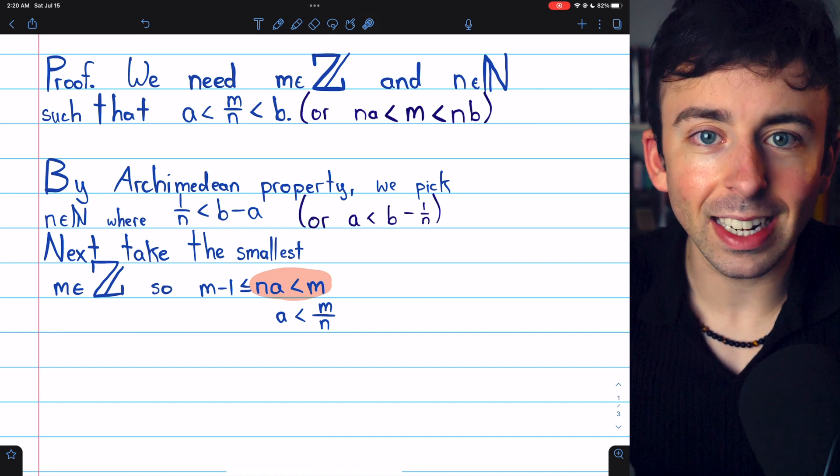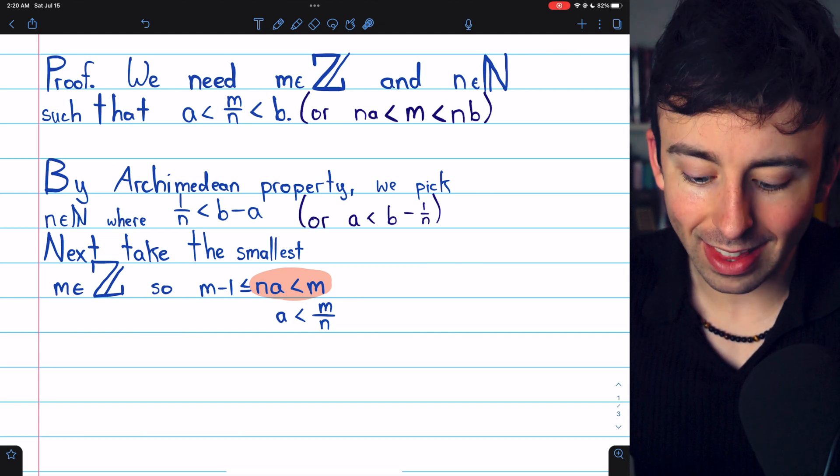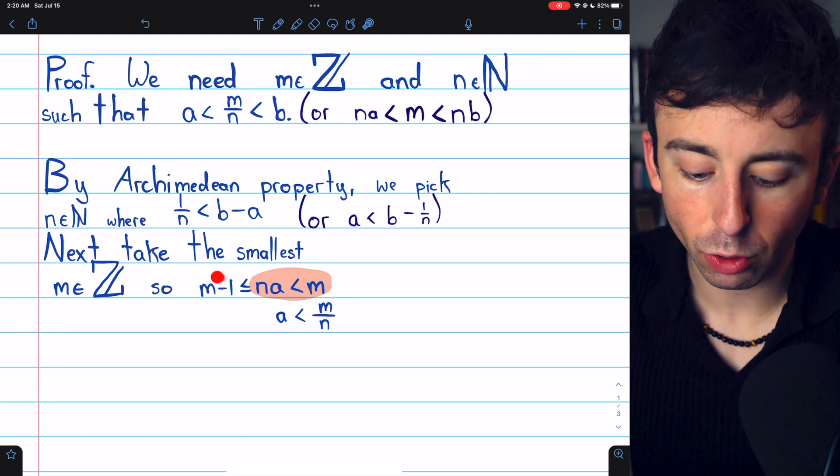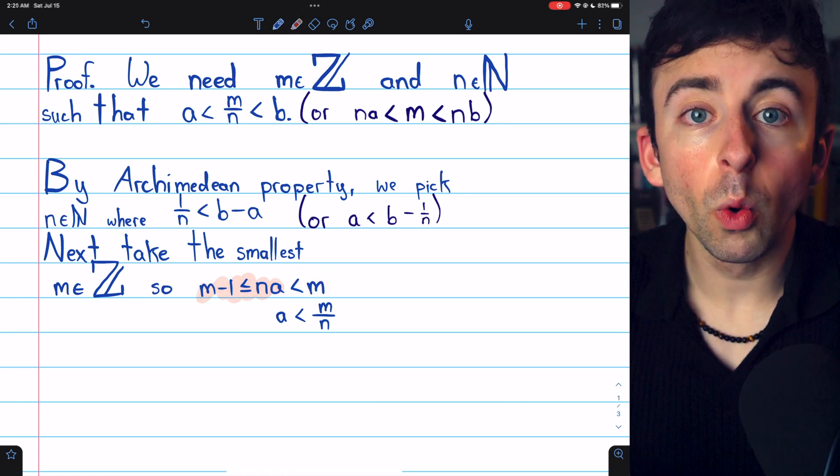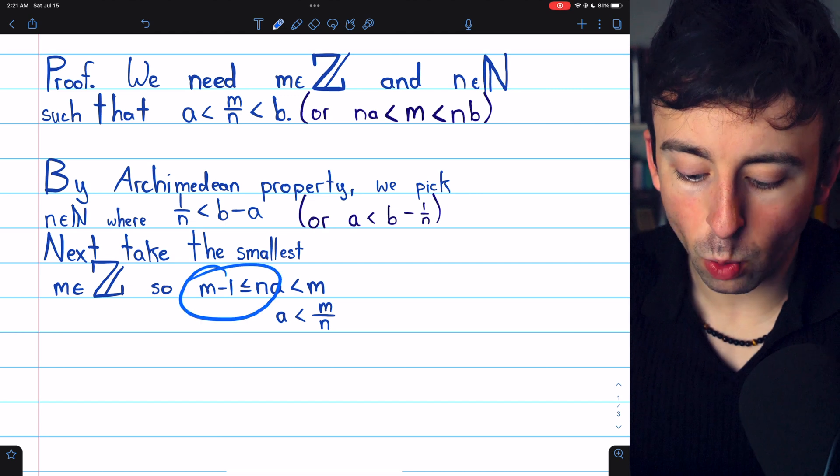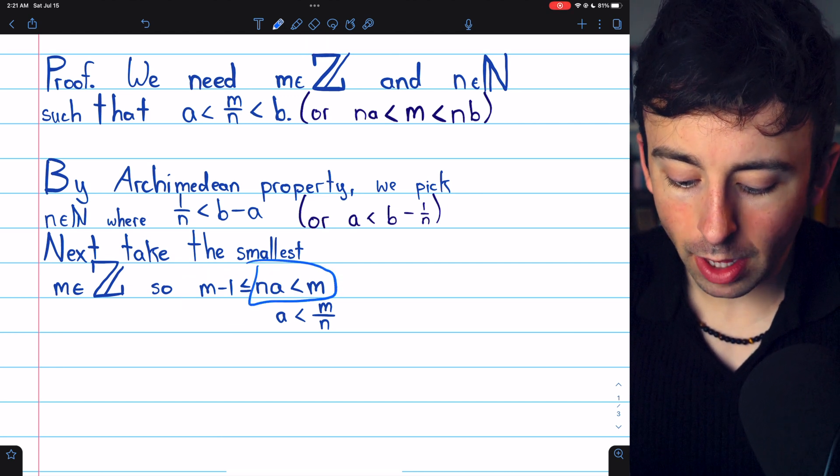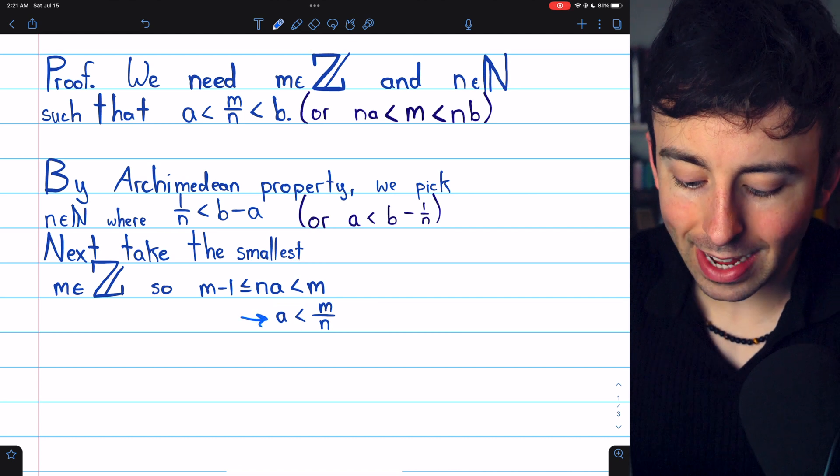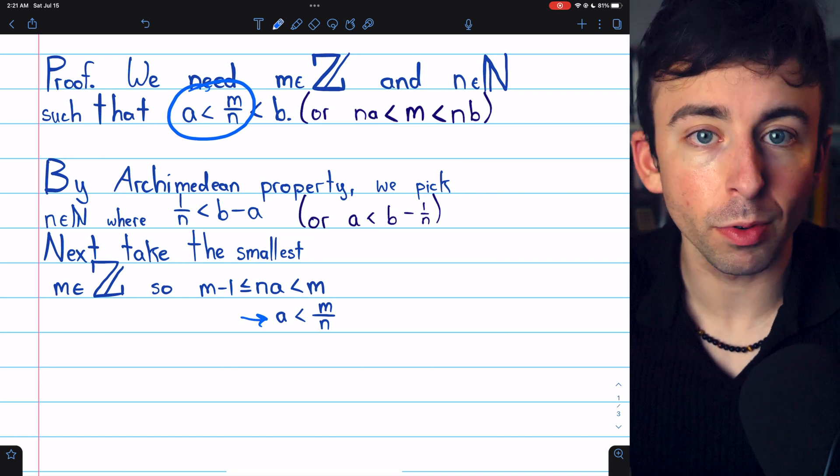Since it's the smallest integer that's greater than NA, the next integer less than M, which is M minus 1, must necessarily be less than or equal to NA. We'll work more with the left side of the inequality in a second, but notice that NA being less than M immediately implies that A is less than M over N, and that is half of our desired result proven.